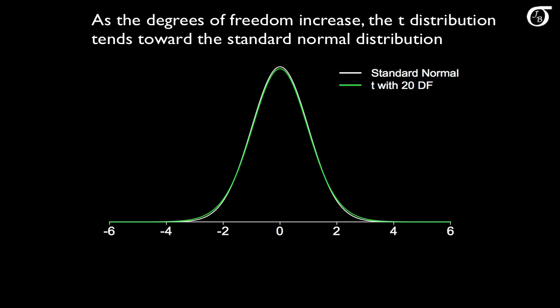Here the curve in green is the t-distribution with 20 degrees of freedom. I'm stopping at 20, but we'd see that if we continued to let the degrees of freedom increase, the green curve would get closer and closer to the white standard normal curve.